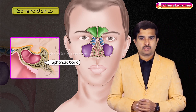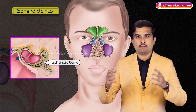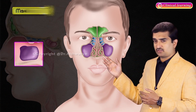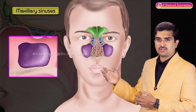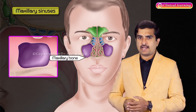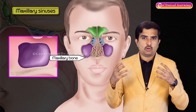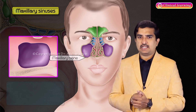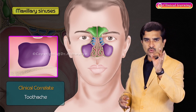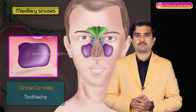The sphenoidal sinus is located in the body of the sphenoid bone and drains into the sphenoethmoidal recess. The maxillary sinus is larger, located in the maxillary bone, where the floor is formed by the alveolar process of the maxilla — responsible for the toothache associated with maxillary sinusitis.